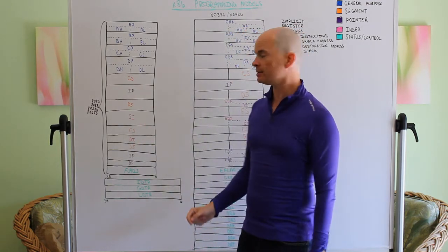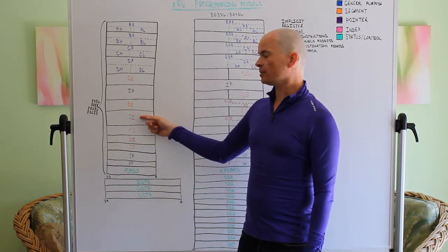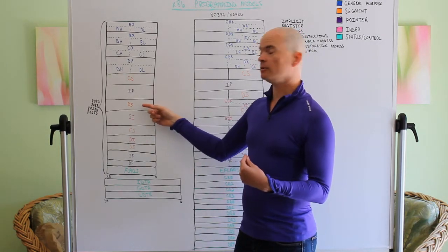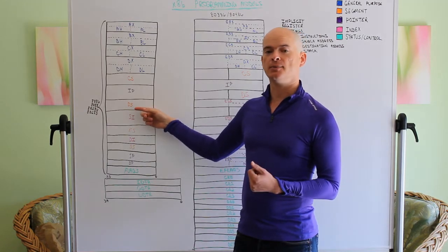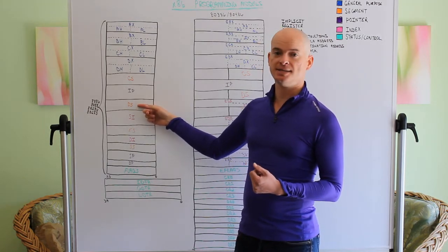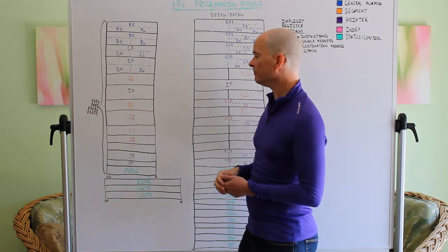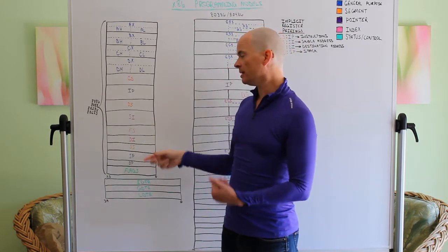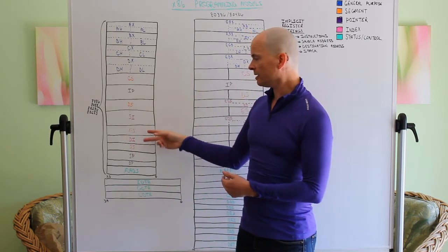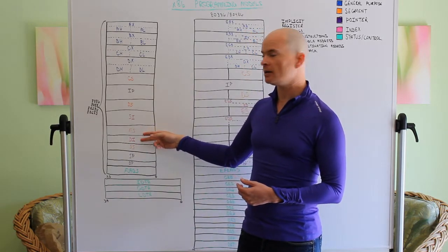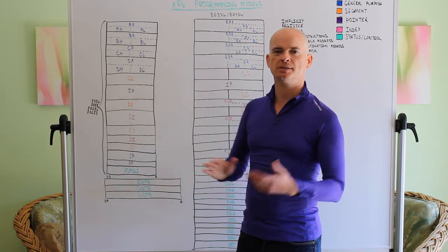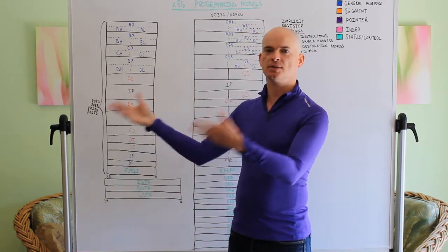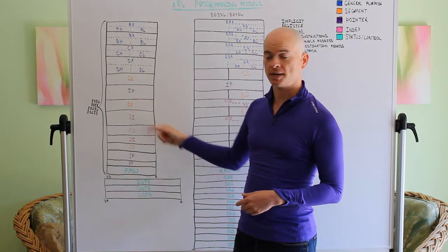This is the source index register, an index register to an address, an offset within the DS, within that data segment we're using. The ES and DI, the extra segment and destination index. This register pair is similar to the DS:SI, it's often used to place things into memory, whereas this one is used to get things out of memory locations.